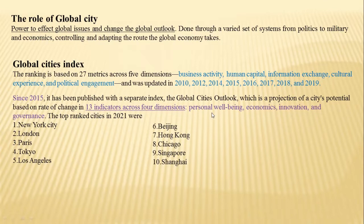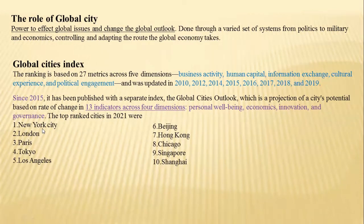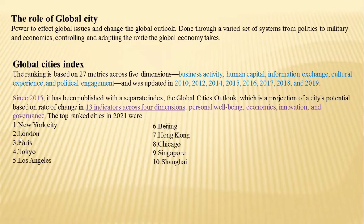The four dimensions now used are personal well-being, economics, innovation, and governance. Based upon these four dimensions, 13 indicators are chosen. Using these indicators, the cities are calculated, indexed, and weights are given. Based upon the weights, the top-ranked cities according to 2021 are determined — with New York City ranked first, followed by London, etc. This is how the global cities index is compiled, meaning New York City holds much more power than the rest of the world's cities.